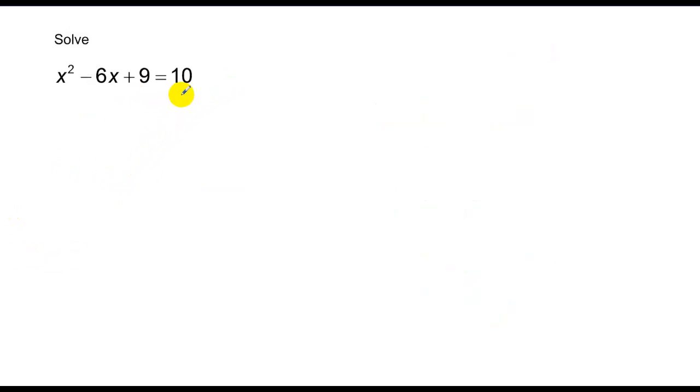Now, this problem looks entirely different, but somewhat the same. You're going to want to say, hey, this is a quadratic. Set that side equal to 0 because that's what we've been taught to do. So x squared minus 6x minus 1 equals 0. The only problem is I can't factor that. There's nothing that multiplies to negative 1 and adds to negative 6.